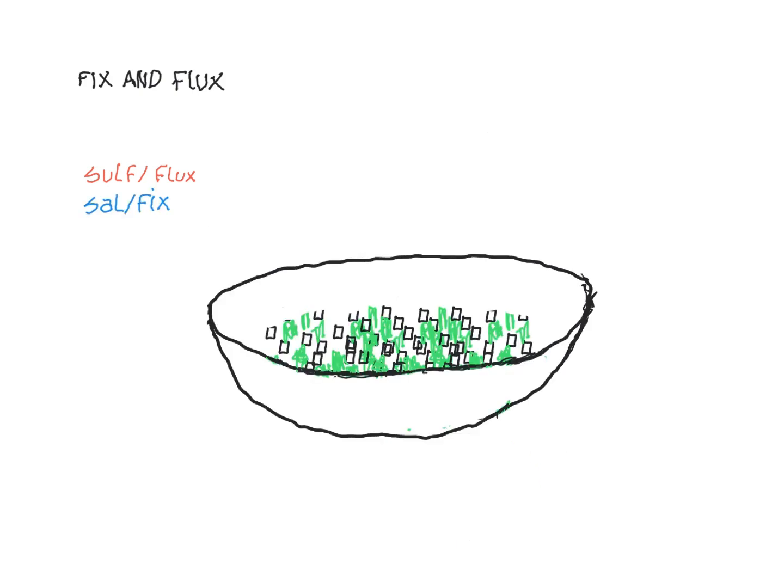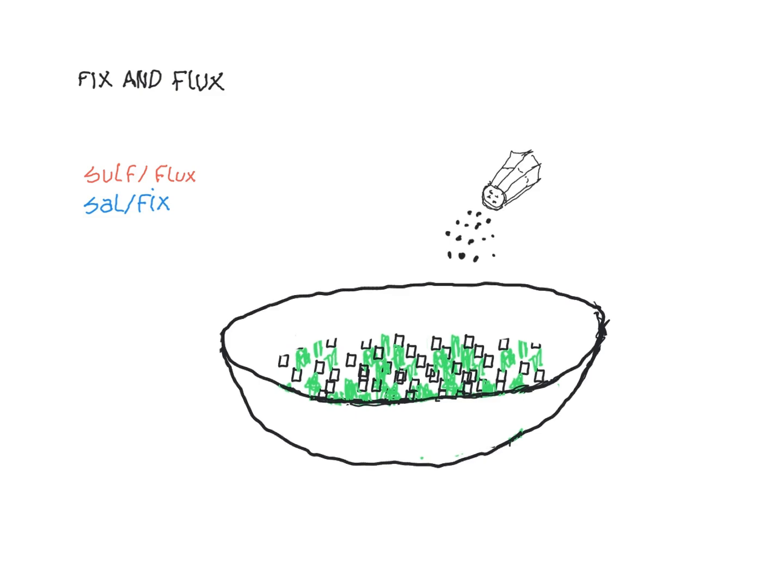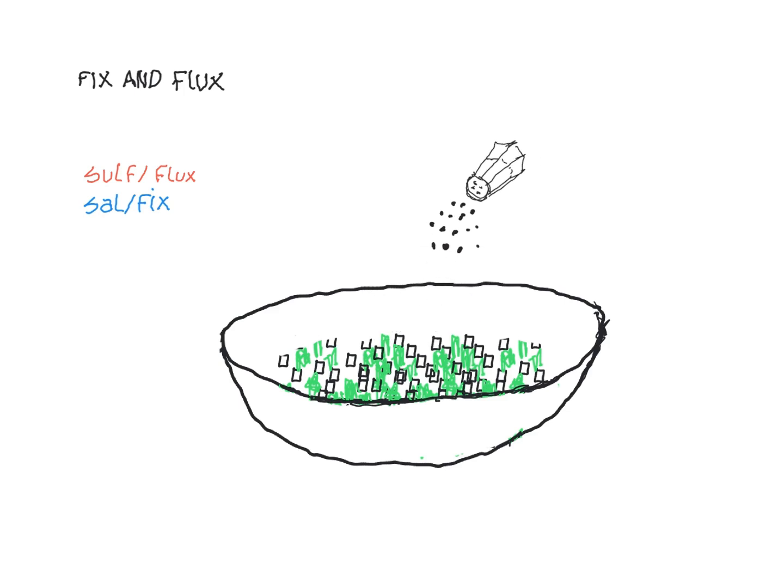The cook turns off the heat, and the soup cools. The married vegetables begin to sal-fix into a fine broth. As the soup arrives as a fine broth, you shake some salt into it. The sulf-processes have reached their maximum in the cooking, and now the heavily sulf-flux soup needs some sal-fix to bring it back into balance.